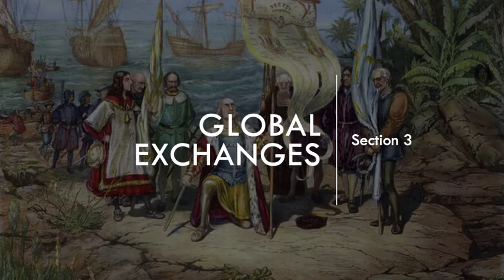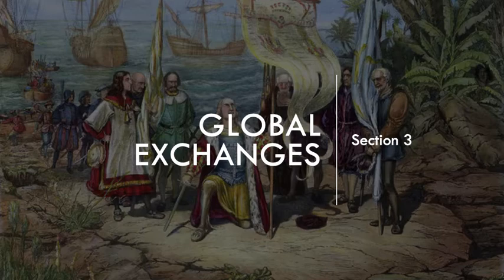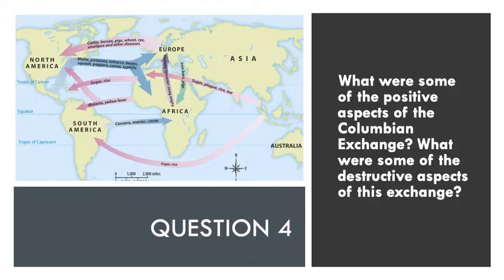Section three is about the global exchanges that take place. The events following Columbus's voyages are going to create a much different world, and they're going to have an impact throughout the planet. Question number four asks you to understand what were some of the positive aspects and what were some of the destructive aspects of the Columbian Exchange.